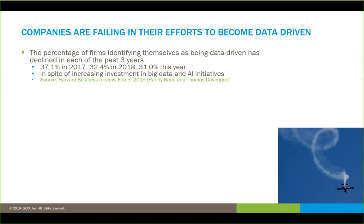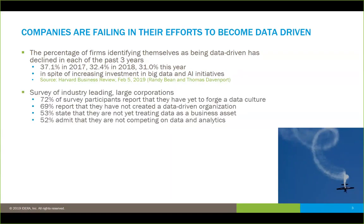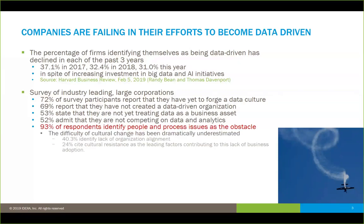This is right out of a Harvard Business Review study published on February 5th of this year. Surveying large industry-leading corporations, they found that 72% of participants didn't have a strong data culture. 69% said they didn't have a data-driven organization. Over 53% say they're not treating data as a business asset yet. And over 50% admit they're not competitive when using data and analytics. But here's the telltale stat: 93% of respondents identify people and process issues as the obstacle really stopping them from succeeding in this area.